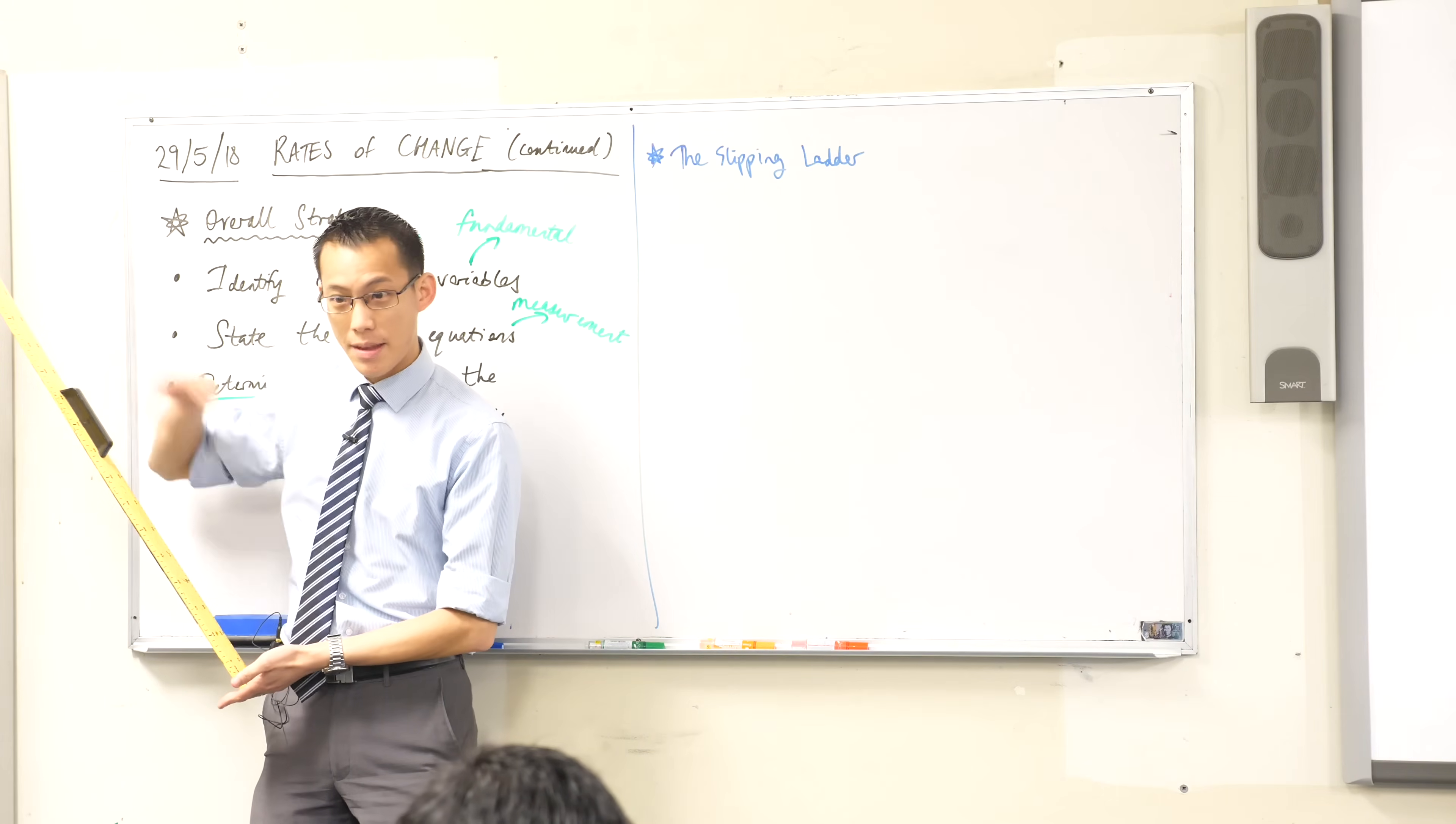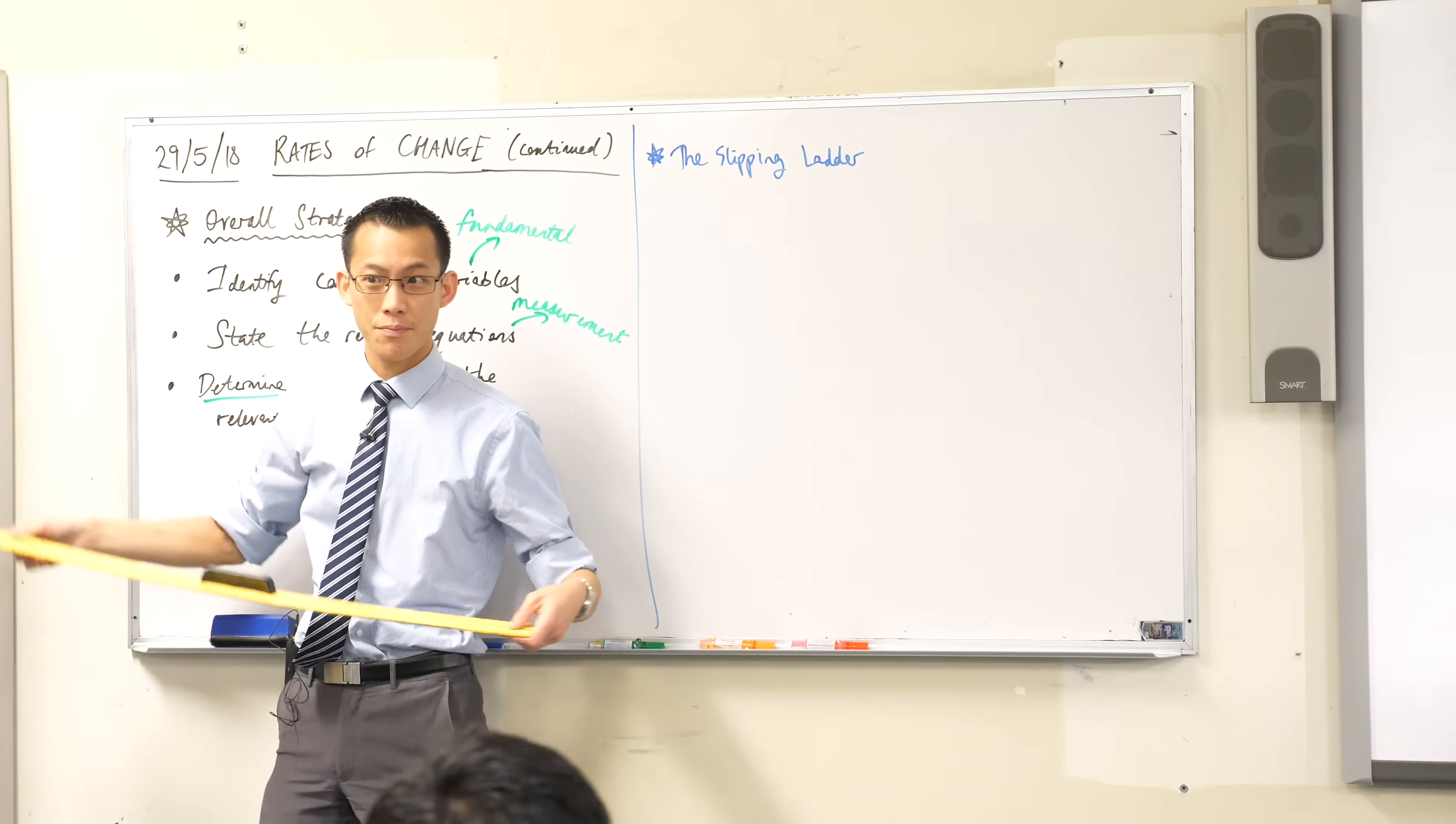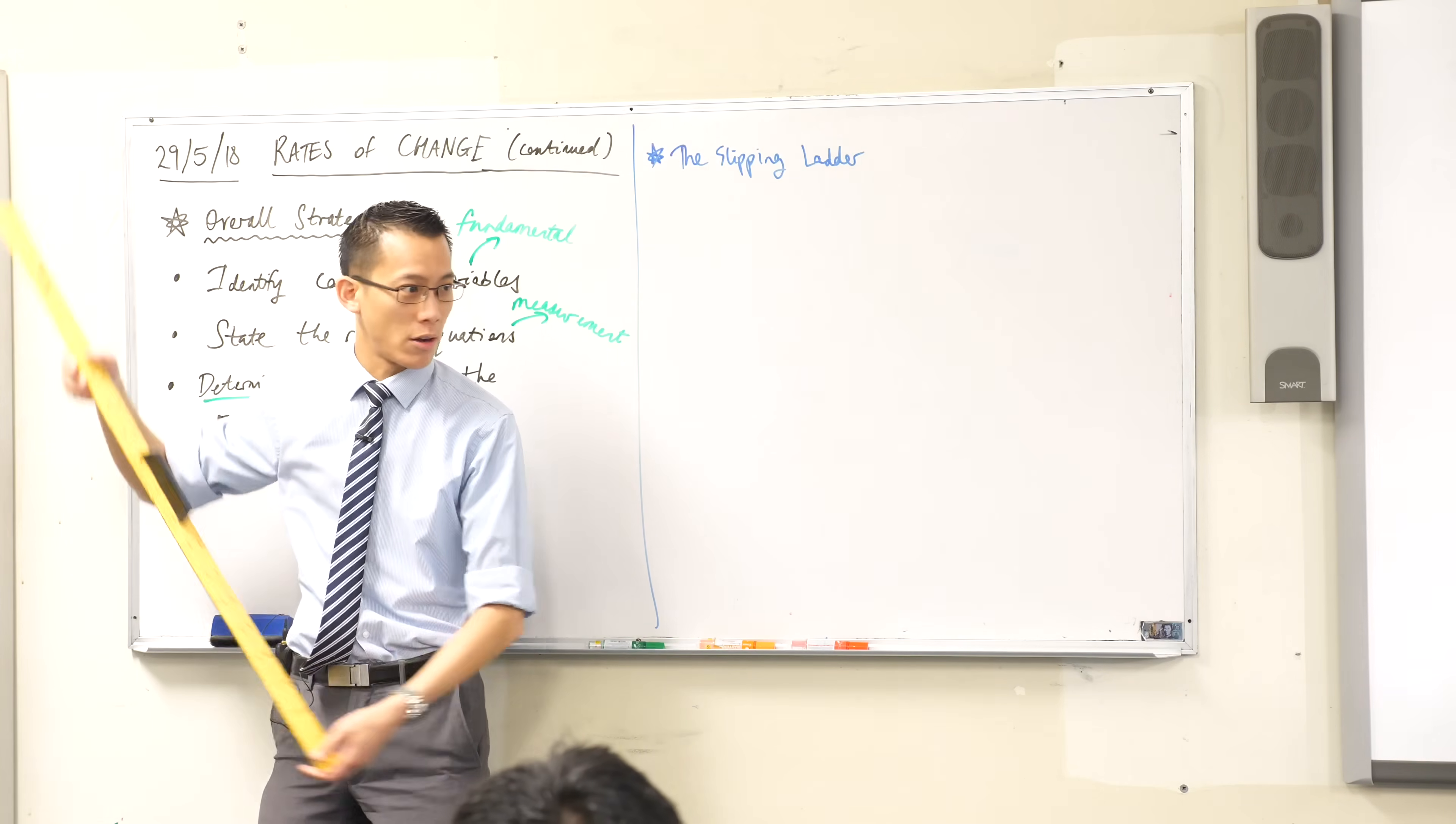The ladder is resting on a wall. It's 10 meters long and then, as the name suggests, it starts to slip. I don't know, it loses grip and off it goes.